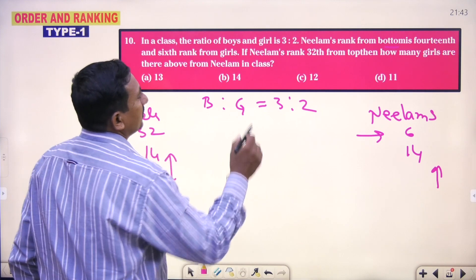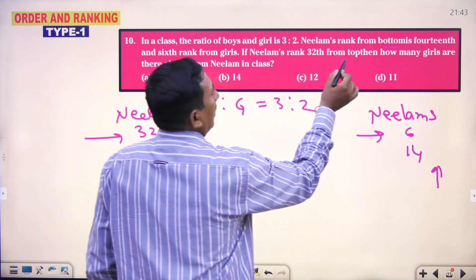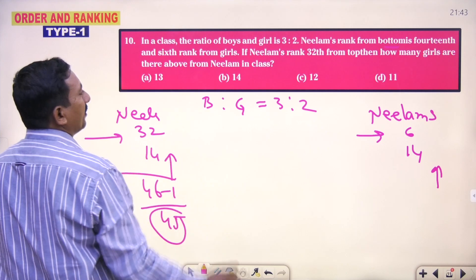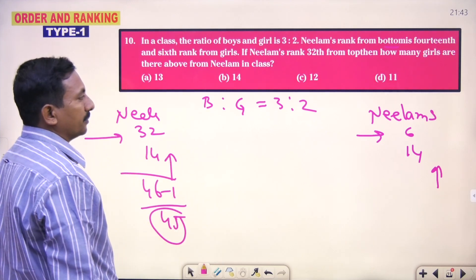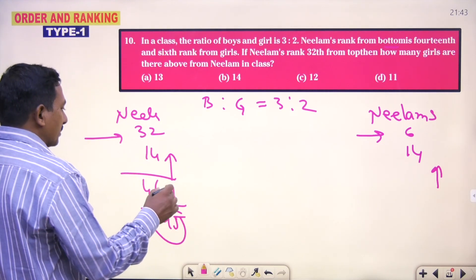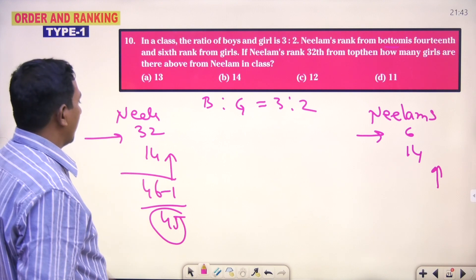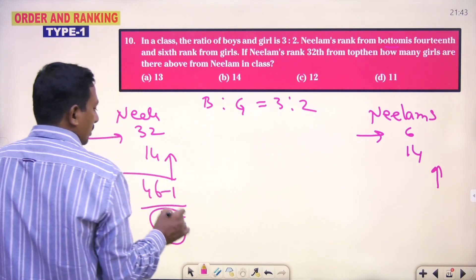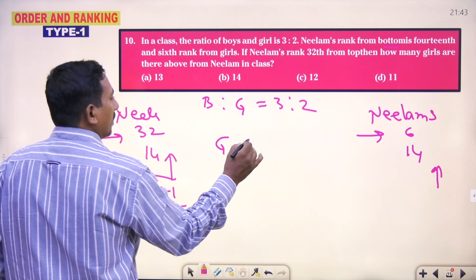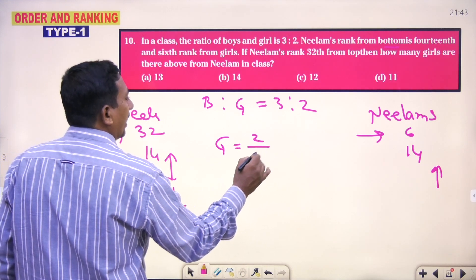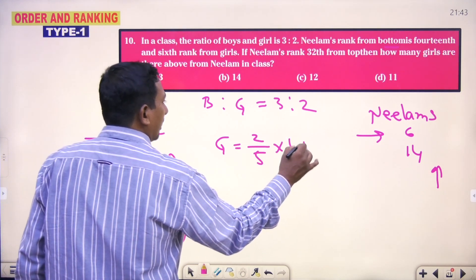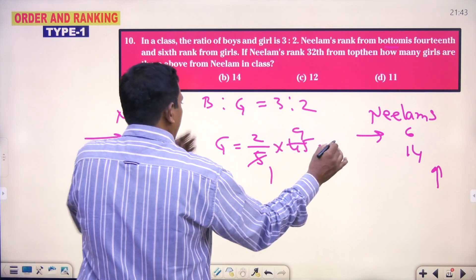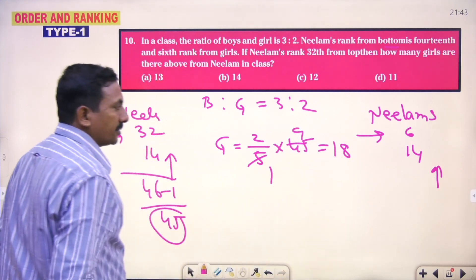45 members. And from the top, how many girls are there above Neelam? The total strength is 45. Girls are 2 by 5 into 45. 5 nines are 45, 2 nines are 18 members.